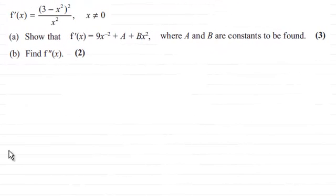Hi. Now for this question, we're given that f'(x) equals (3 - x²)² divided by x², where x does not equal zero. And we've got to show that f'(x) equals 9x⁻² + A + Bx², where A and B are constants to be found.